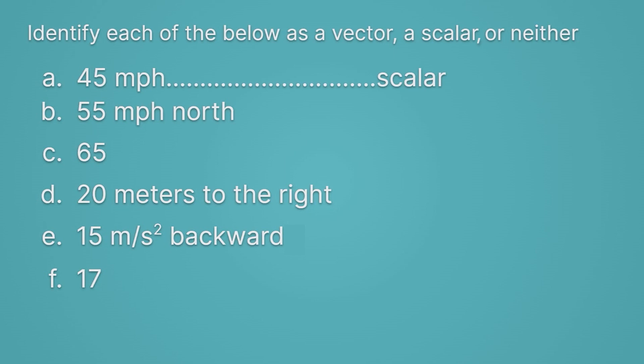That's different than our next example, B, which says 55 miles per hour north. Now we have a size, 55, a unit, miles per hour, and a direction. That's a vector.